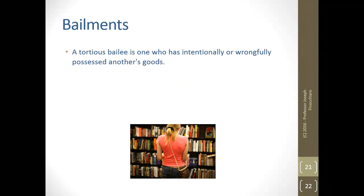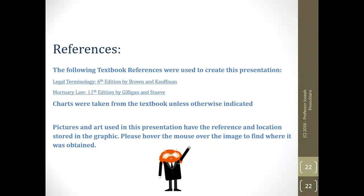The last type is a tortious bailee — one who has intentionally or wrongfully possessed another's goods. They haven't necessarily stolen it — that leads to another tort called conversion, or under the modern penal code, theft. But a tortious bailee intentionally and wrongfully possesses another's goods: they take the lawnmower and are not giving it back, maybe not returning calls, and you don't know if they've stolen it or not — it's not clearly a crime, but they're also not bringing it back. Keep those things in mind for when we start looking at torts. Thanks for your attention — we'll see you next time.